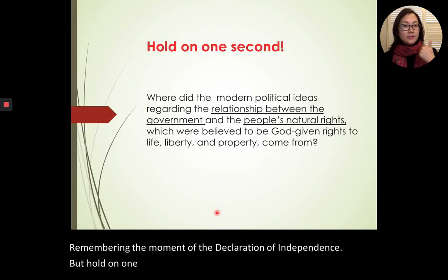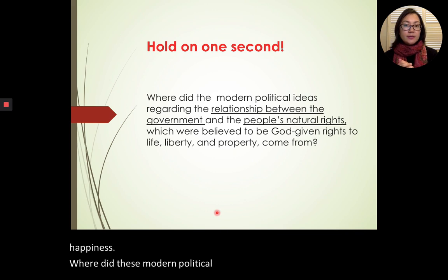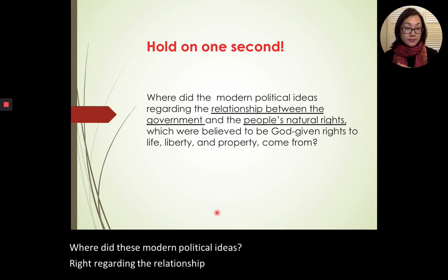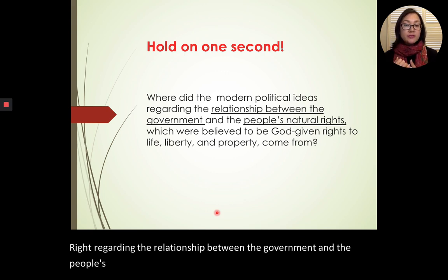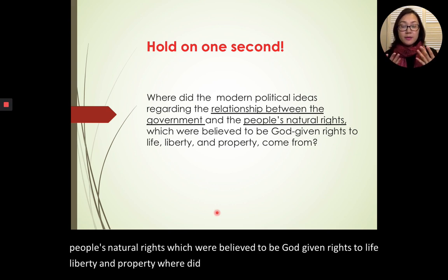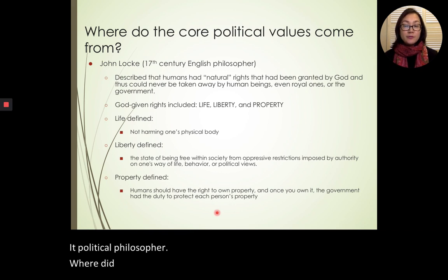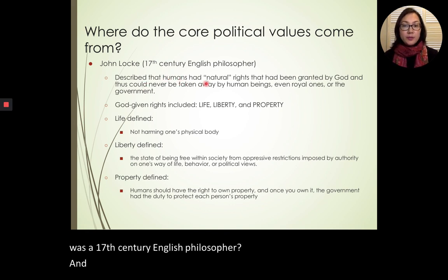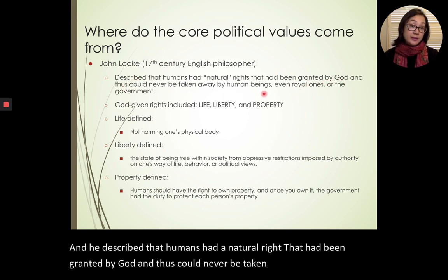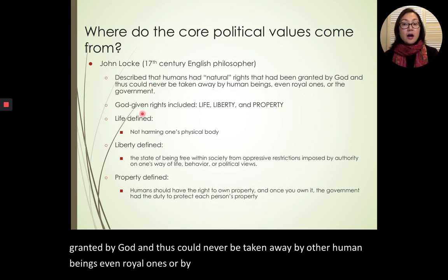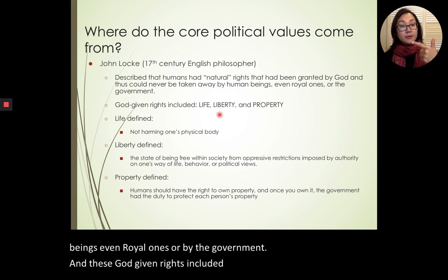Where did these modern political ideas regarding the relationship between the government and the people's natural rights — believed to be God-given rights to life, liberty, and property — come from? It came from John Locke, a 17th century English philosopher. He described that humans had a natural right granted by God that could never be taken away by other human beings, even royal ones, or by the government. These God-given rights included life, liberty, and property.